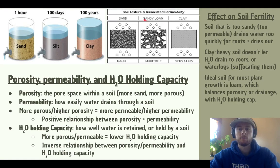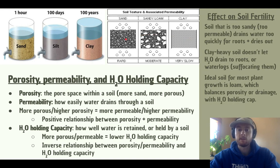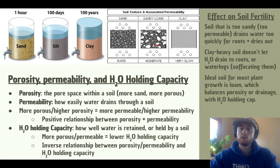Looking at this diagram, we can see that sandy loam — a nice mixture of sand and clay with some silt — allows water to move in, holds it with moderate water holding capacity, but also allows it to drain through. A more clay-dominated soil has very slow drainage and becomes waterlogged, which can suffocate plant roots. A sand-dominated soil drains too rapidly, so the porosity is too high and the holding capacity is too low. Again, a sandy loam is a happy medium that allows plants proper drainage but also proper access to water.